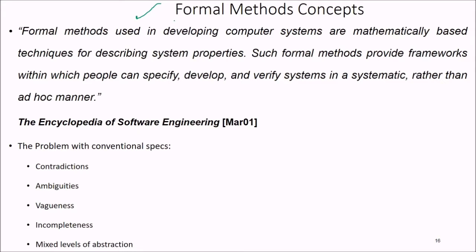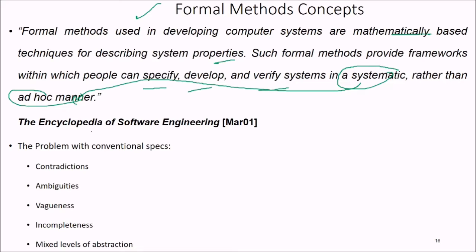Formal methods are mathematically based techniques used in developing computer systems for describing system properties. They provide a framework within which people can specify, develop, and verify systems in a systematic rather than ad-hoc manner. The Encyclopedia of Software Engineering notes that problems with conventional specification include contradictions, ambiguity, vagueness, incompleteness, and mixed abstractions.